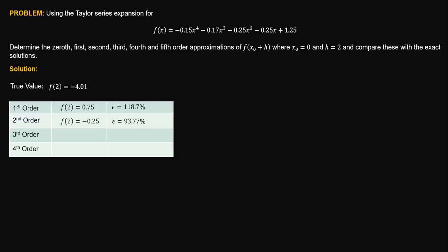For the third order approximation, the error is 59.85%, down from 118%. By the fourth order of approximation, we obtain the exact answer so the error is equal to 0. The truncation error can be estimated using the Taylor series expansion — the more terms we consider, the more the truncation error brought by this numerical approach is reduced.